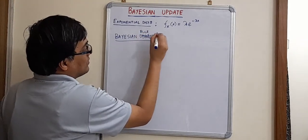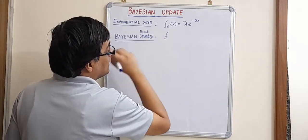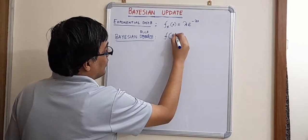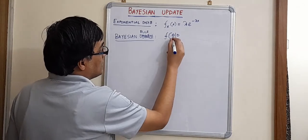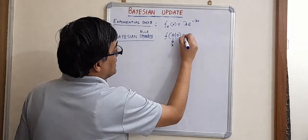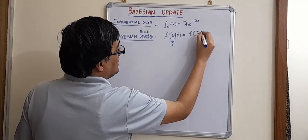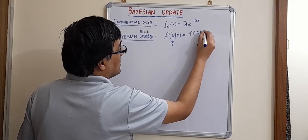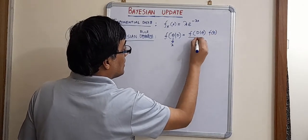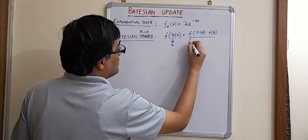That will be given by f of theta given data. This is the posterior density function. Now theta is lambda for us, the parameter. That is equal to f d given theta, which is the likelihood, into f theta by the total probability.